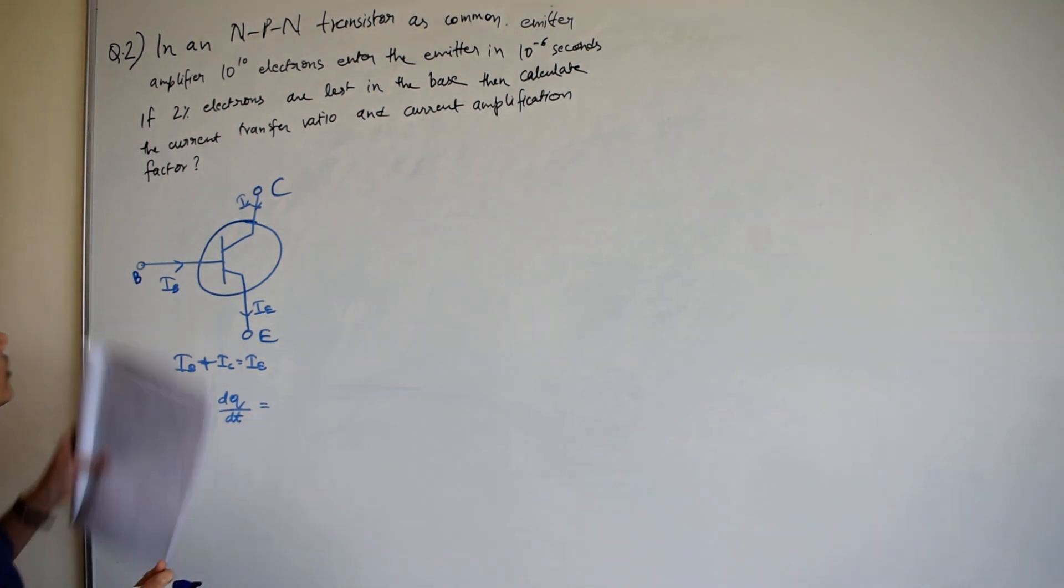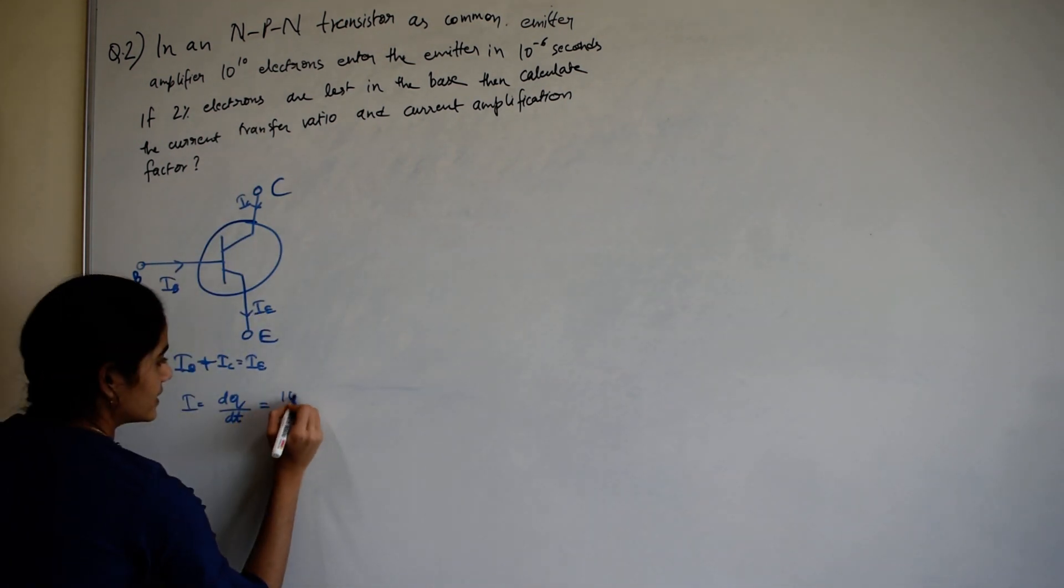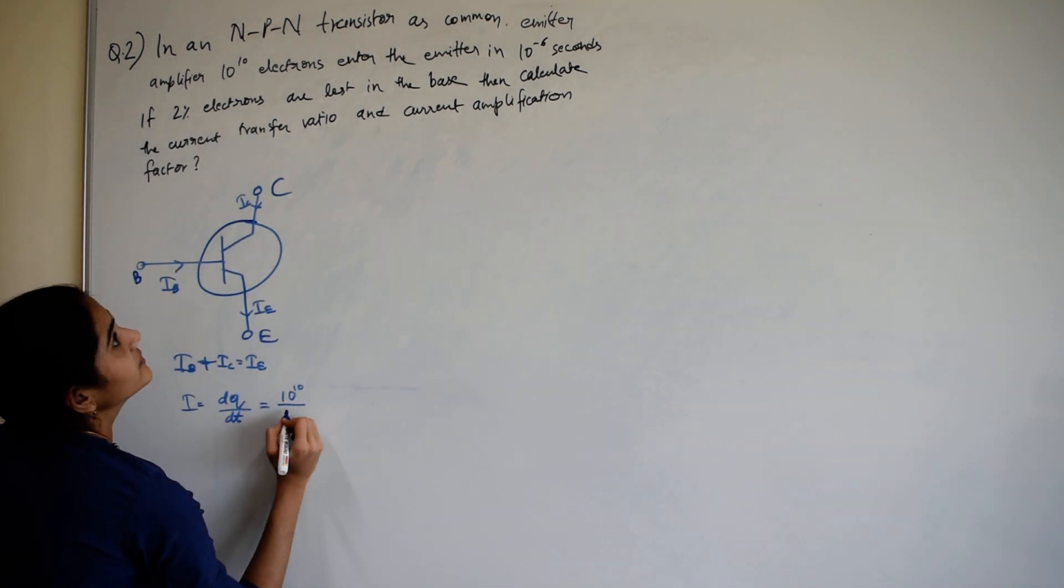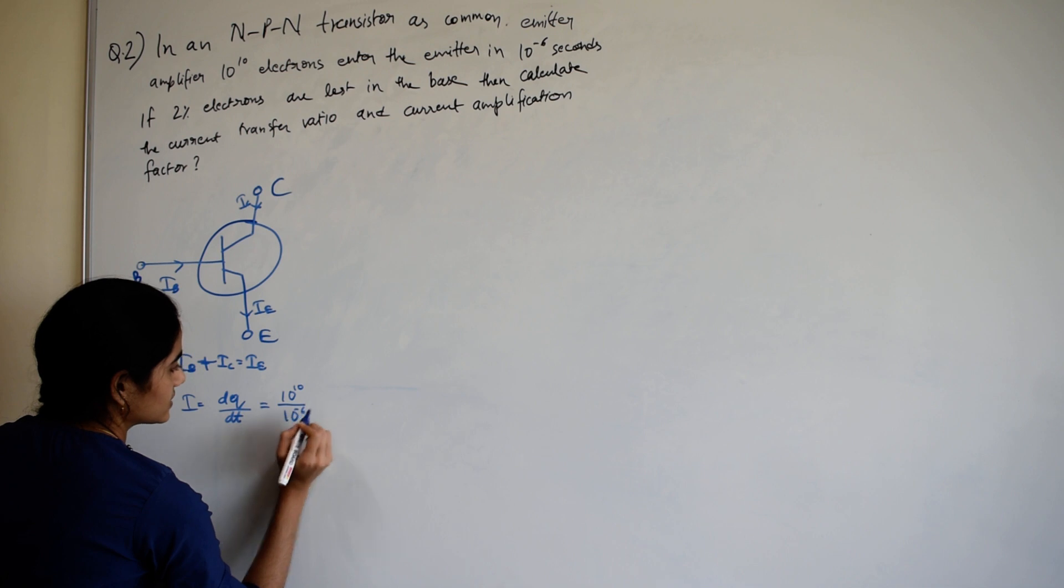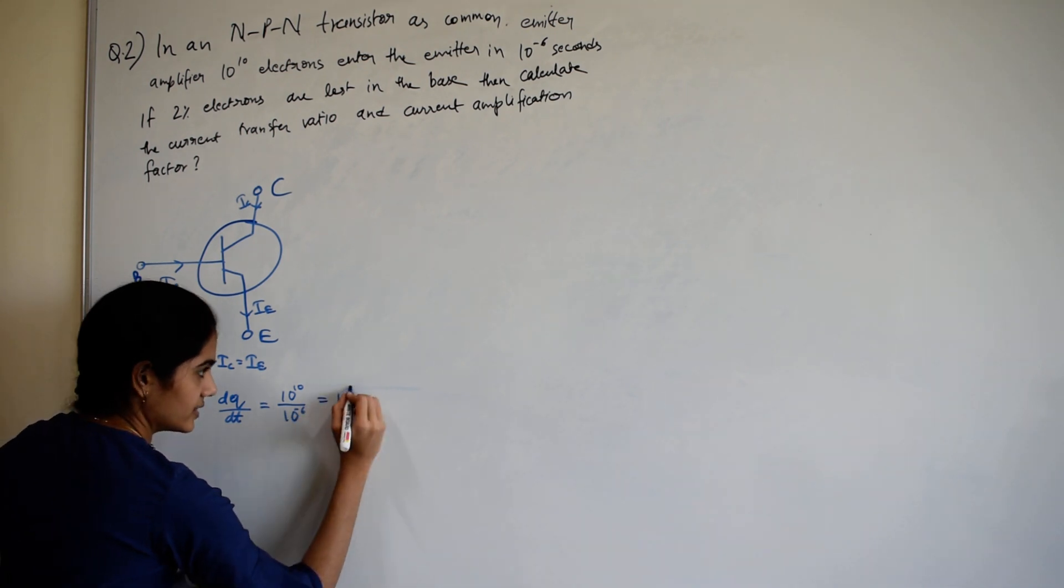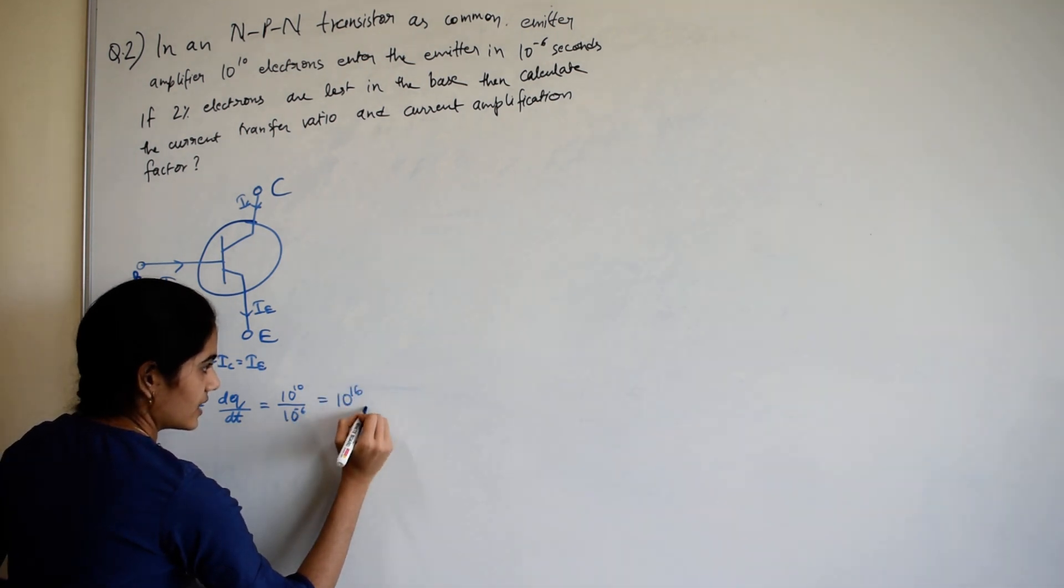The number of electrons enter is 10 raised to 10 and time, 10 raised to minus 6. So current would be 10 raised to 16 ampere.